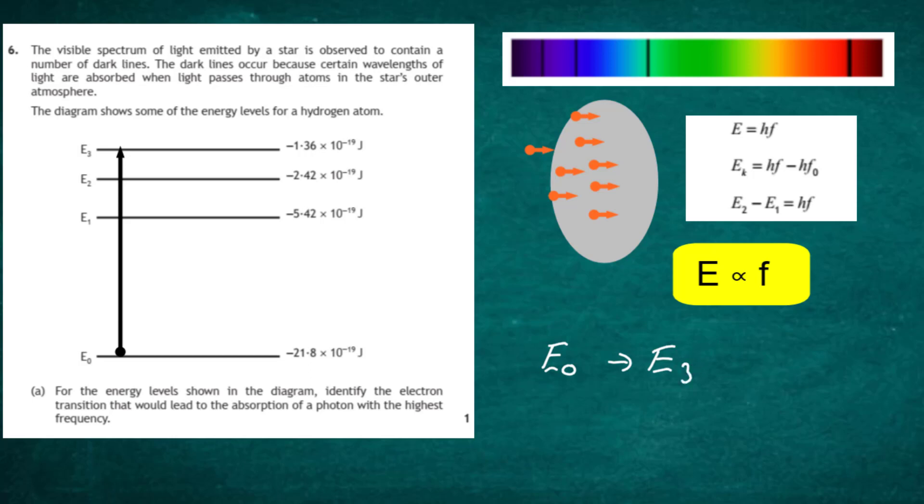That is the biggest energy gap, and that is the biggest energy gap which a photon will have in order to lift that electron up to energy E3. So the answer for one mark is quite simply look for the biggest energy gap transition, and that's from E0 to E3, which will give rise to the bigger frequency, because energy of the photon is directly proportional to the frequency.